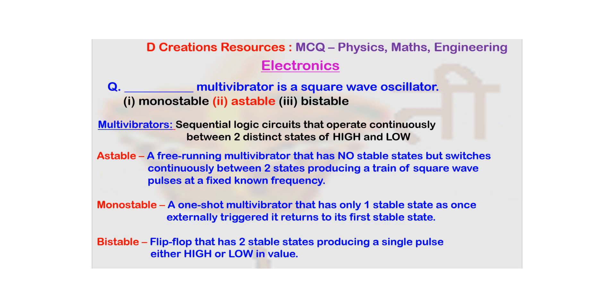So if you consider a monostable multivibrator, there is only one stable state as the name indicates, and it needs an external trigger so that it can come back to its first stable state. So there is a stable state and another state is unstable.